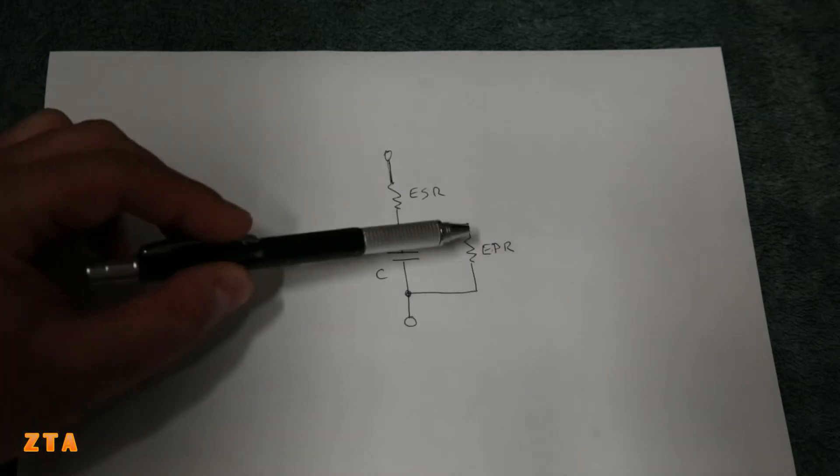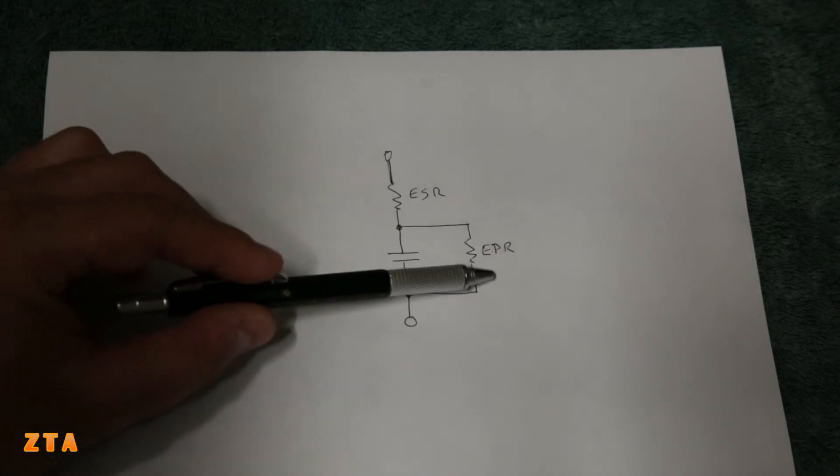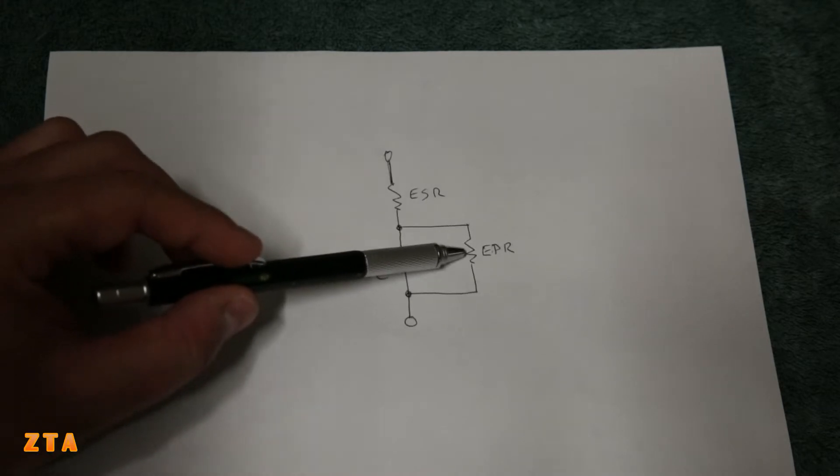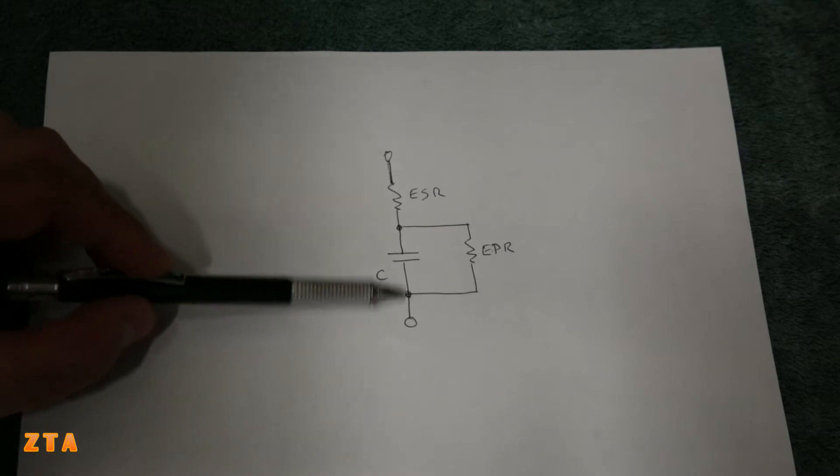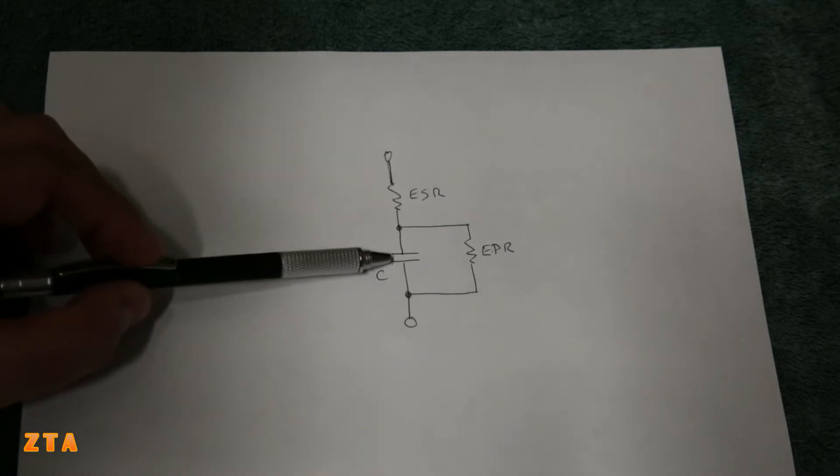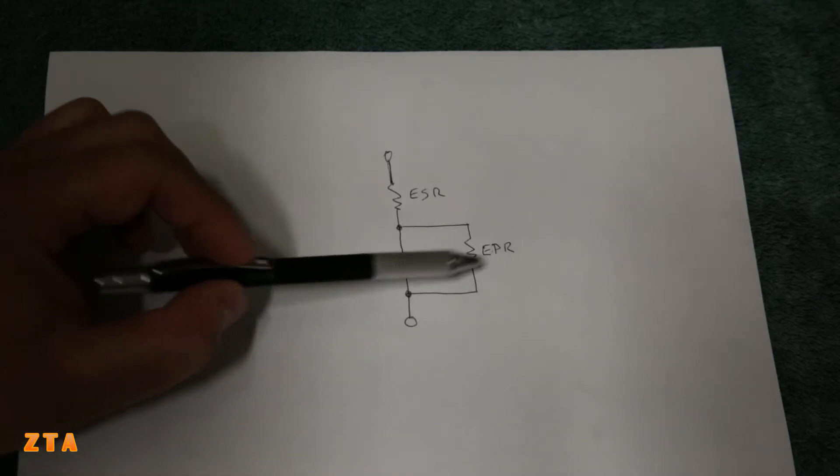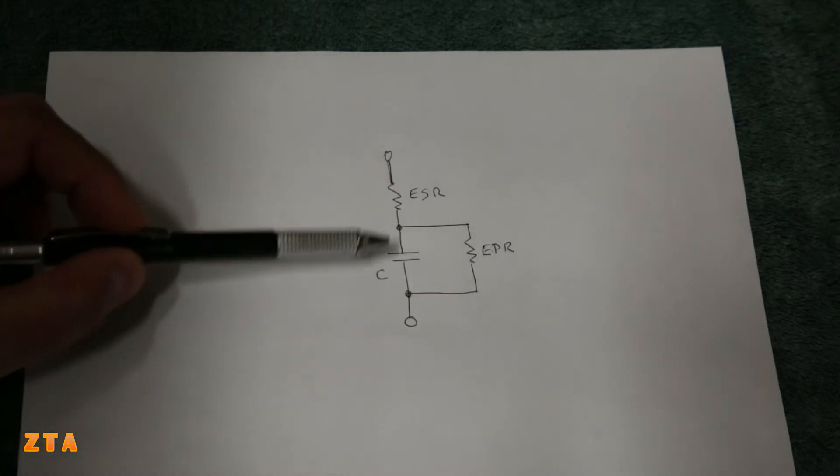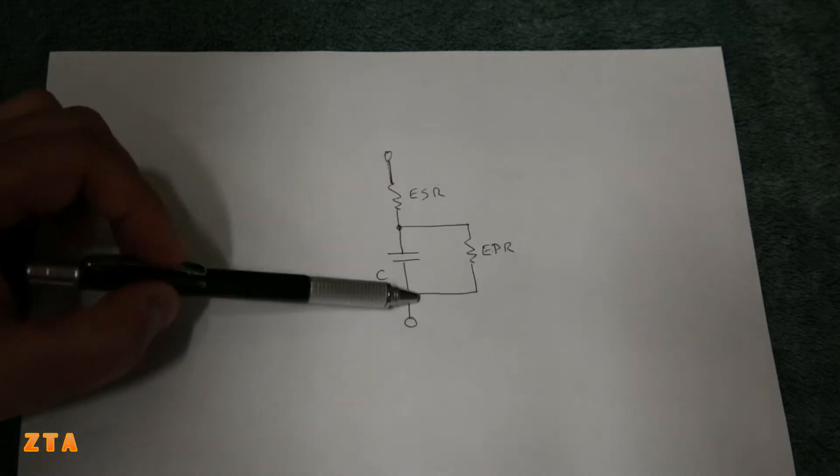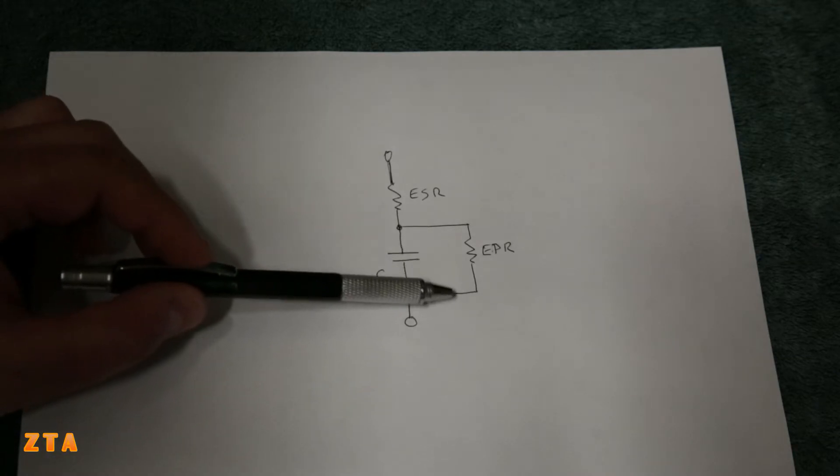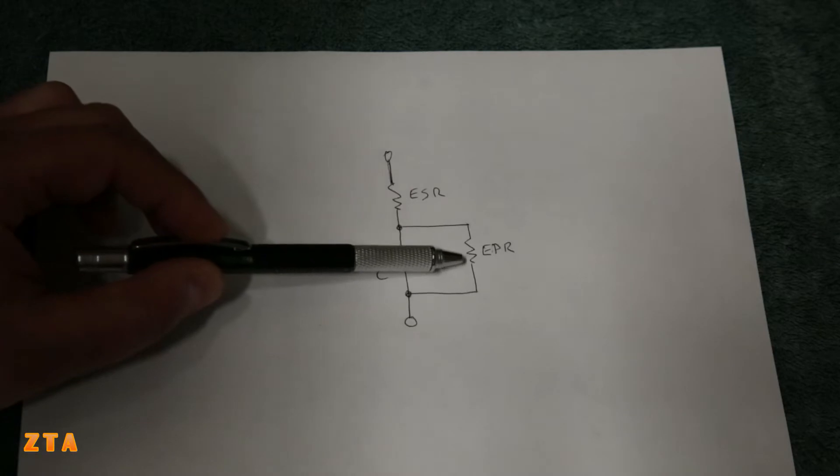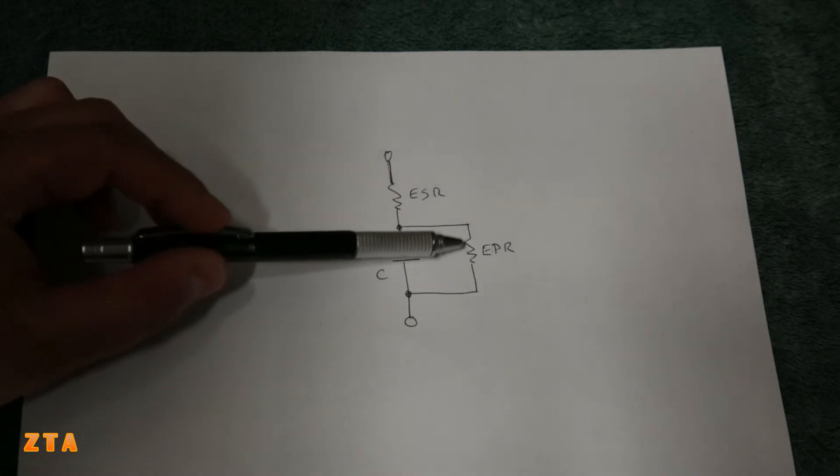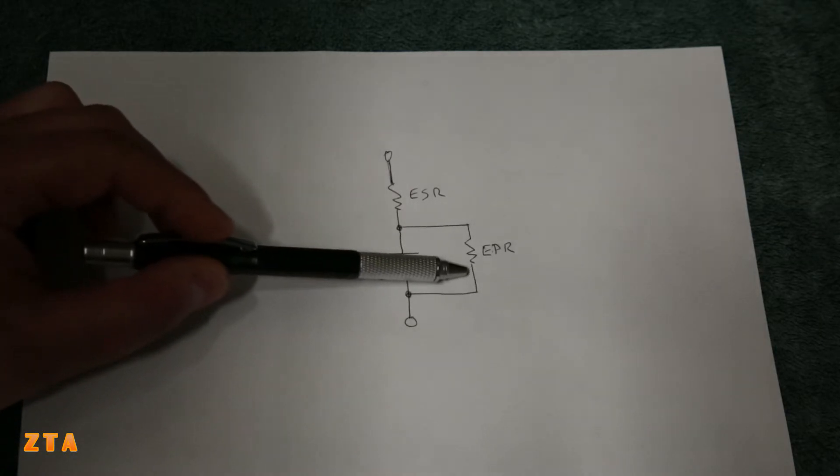We have the EPR, or equivalent parallel resistor. This is the leakage resistance that we'll be measuring today. And we have the ideal capacitance right here. The EPR resistor, we want to be as high as possible so there's no short across the capacitor. When capacitors get older, this resistance here, the EPR, becomes lower and lower.